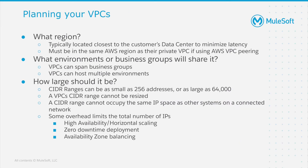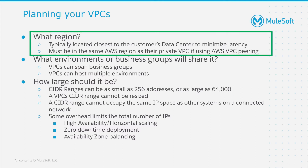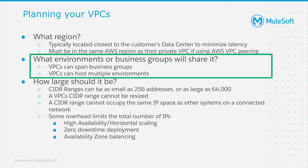So when you get ready to plan your VPC, it's important to note a few considerations. The first is what region do you want your VPC to be built in? Typically, this is closest to your data center in order to minimize latency. It's important that this is in the same AWS region as your private VPC if you're planning to use AWS VPC peering, which we'll get into later in this video. Second, think about what environments or business groups are going to share your VPC. VPCs can span business groups or sub-organizations that exist within the platform. VPCs can also span multiple environments — for example, all of the non-production environments that may exist in each business group, like development, QA, or staging.